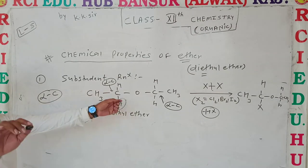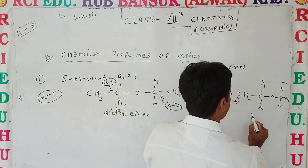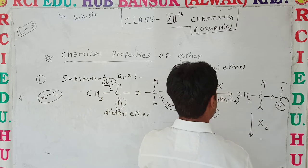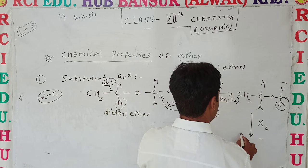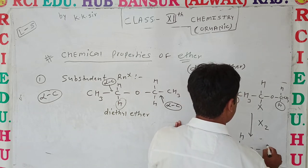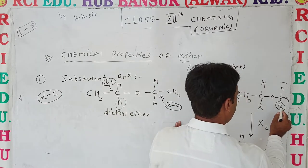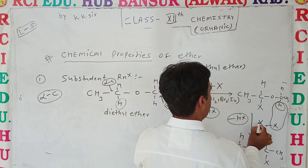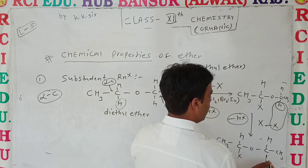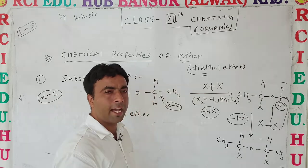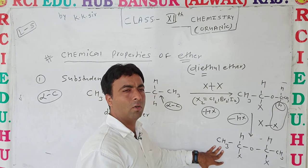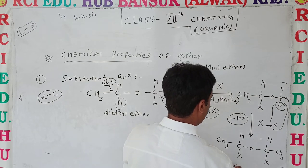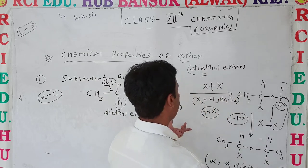If the mono-halide diethyl ether reacts again with X2, one more hydrogen is removed from the alpha carbon, and another X attaches. This gives the dihalo product: CH3-CX2-O-CH2-CH3, called dihalo diethyl ether, also referred to as alpha,alpha-dihalo diethyl ether. This reaction is called a substitution reaction.